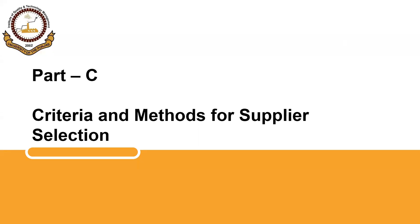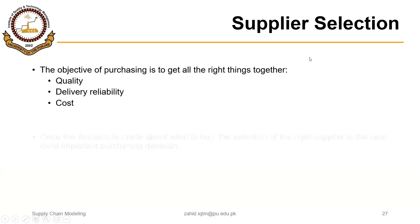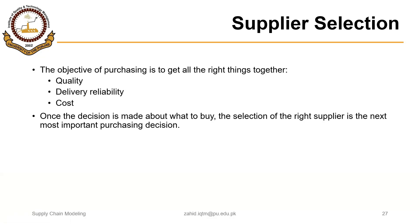Welcome back. Based on the nature of the business the purchasing organization is in and the nature of the item being purchased, there could be different criteria and methods for selecting. Perhaps the three most important factors in selecting a supplier are quality, delivery reliability, and cost.